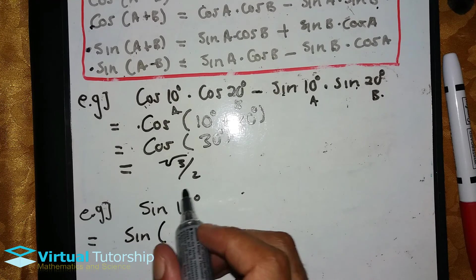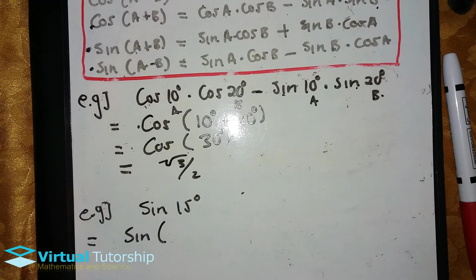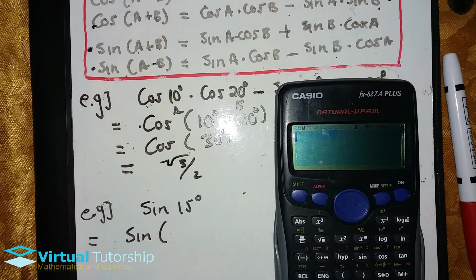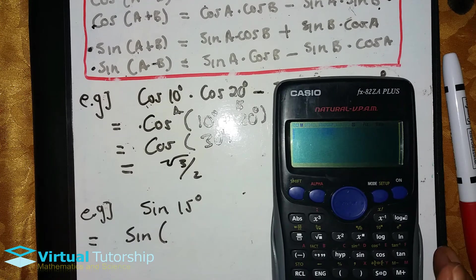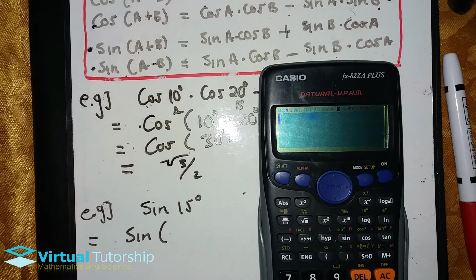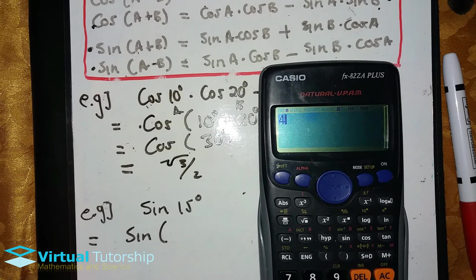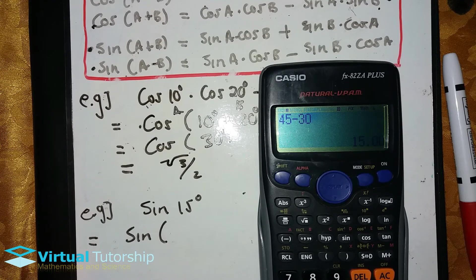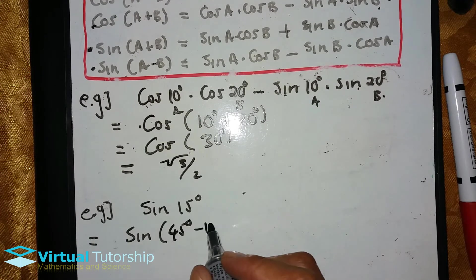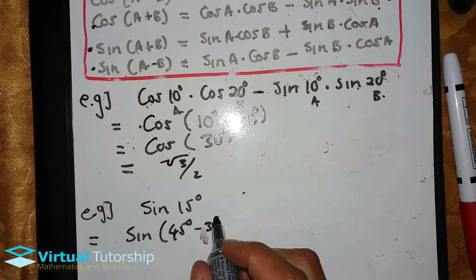Remember, now without the calculator, we need to use special angles. Special angles can add or subtract to give 15 degrees. So it's sine of 15 degrees, which is 45 minus 30 degrees.